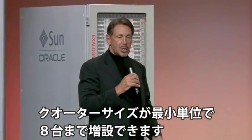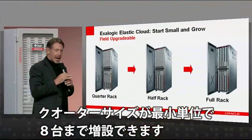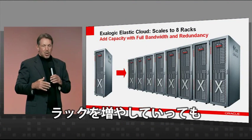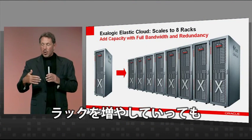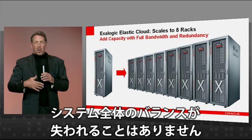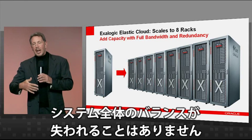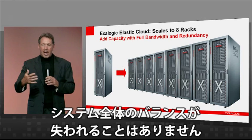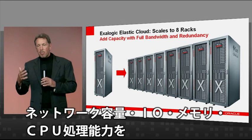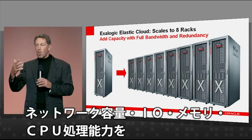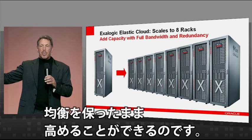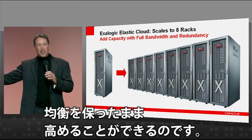Start small with a quarter rack, and you can scale up to eight of these things. And as you add racks, you're maintaining a balanced system. You're adding network capacity, you're adding I/O capacity, you're adding memory, you're adding flash, you're adding cores and CPU processing — all in parallel. You're always getting a balanced system.